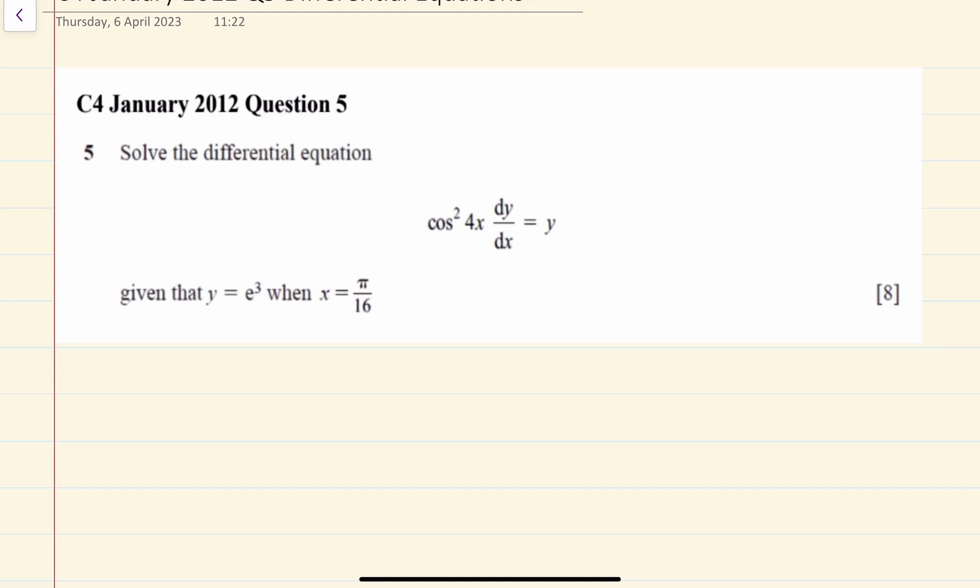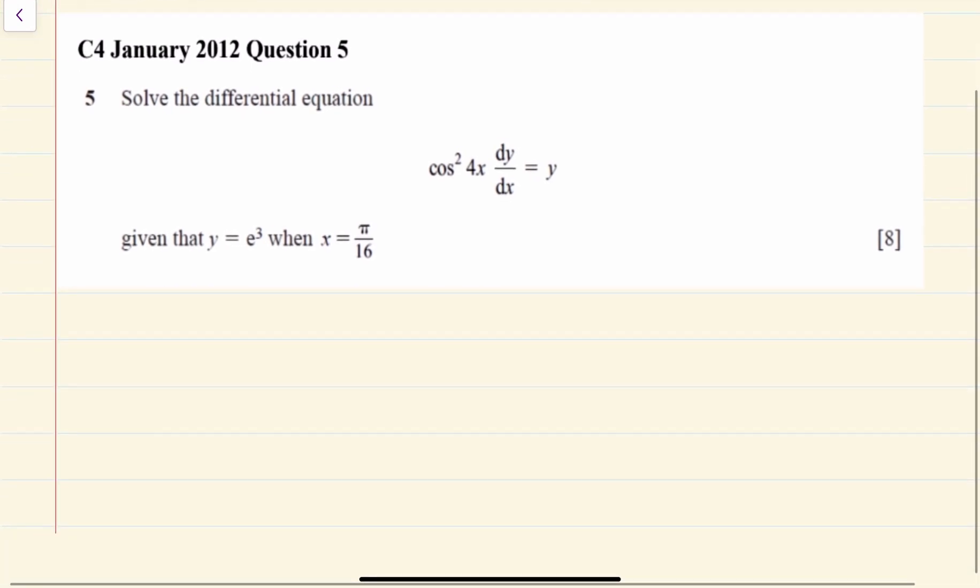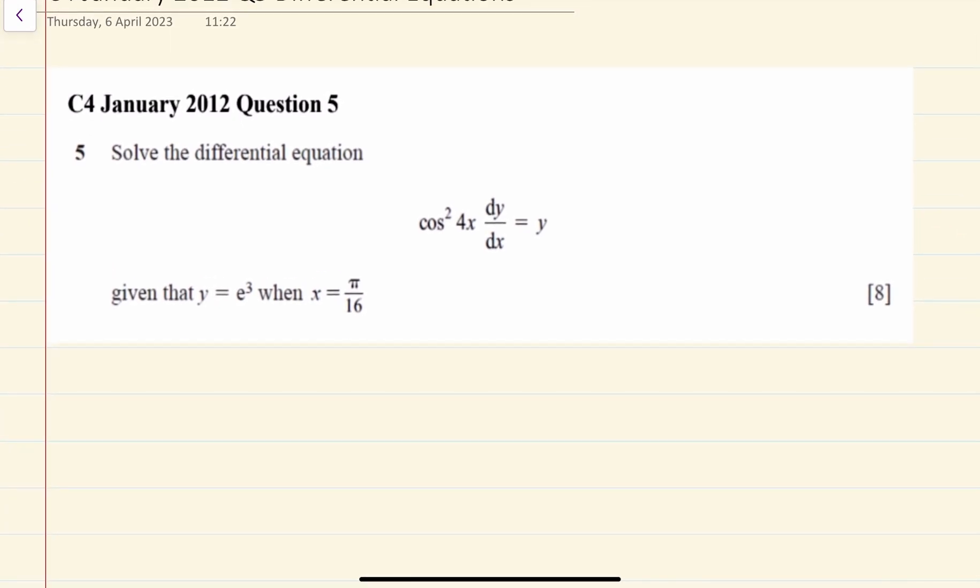It's the same type of question that can come up in your A21 pure mathematics exam. So it says solve the differential equation cos squared 4x dy/dx equals y.